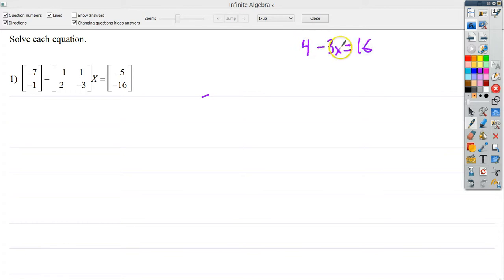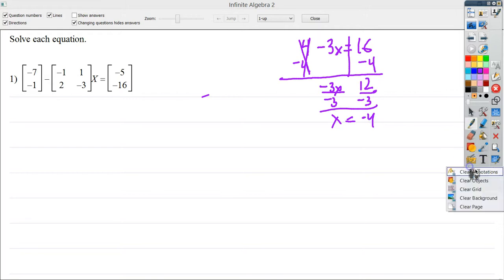my standard real number equation, you would subtract 4. These would cancel. You'd bring down negative 3x. You'll end up with 12. You might divide by negative 3 here and come up with a final answer of negative 4. That's kind of what you would do in that situation.